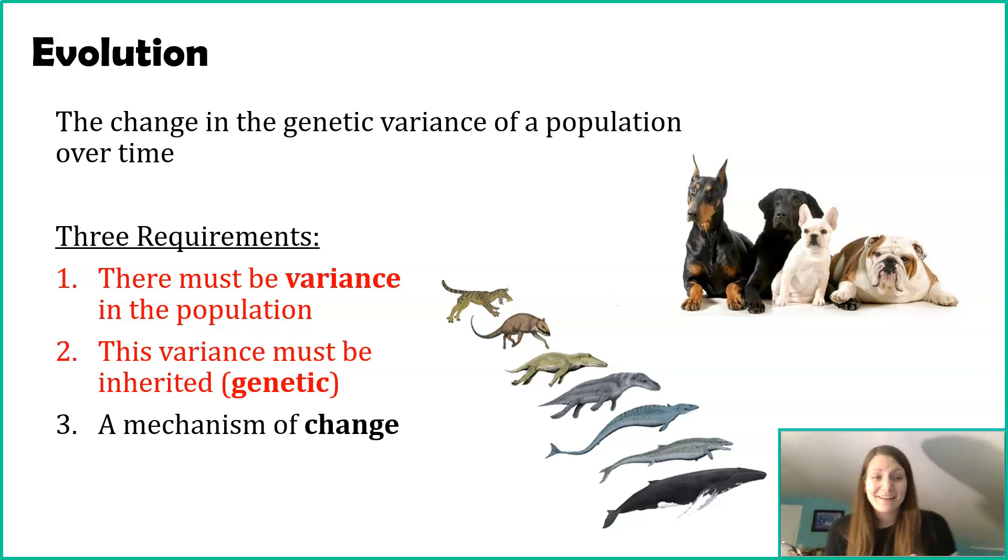And then finally, there has to be some mechanism of change. How does that genetic variance change? Just to give you some examples that we're going to dive more into, a mechanism of change could be natural selection. What we're going to focus on in this video is the genetic variance part. So I'm combining in red the first and second requirement, so we have variance with a genetic component.